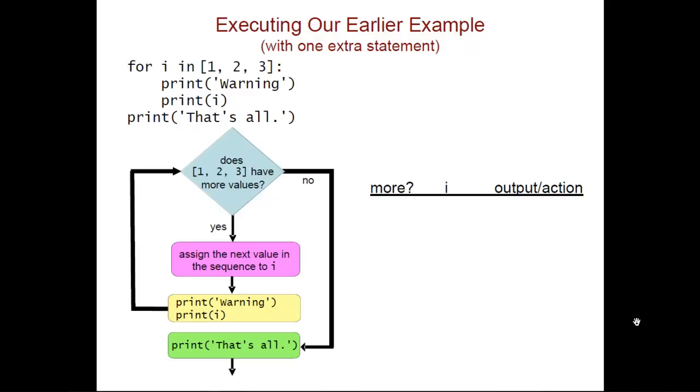So in this case, what we repeatedly ask ourselves is whether the sequence 1, 2, 3 has any more values that have yet to be processed. So initially it does, and we take the first value in the sequence, which is the 1, and we assign it to the variable i. We then execute the body, which in this case is printing the string warning, and then printing the current value of i. And that's why we get warning 1.